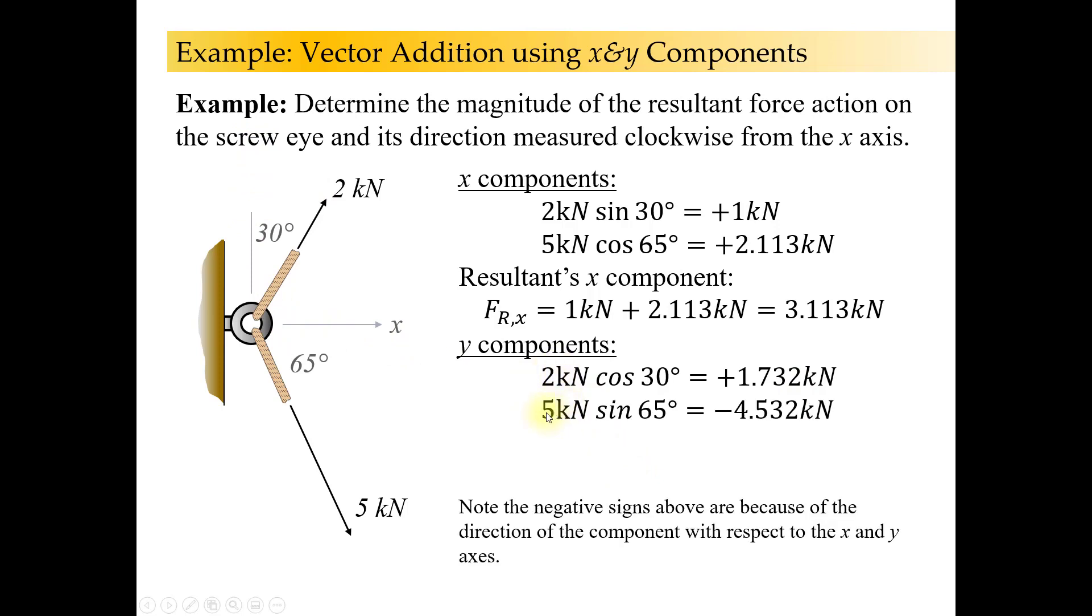This one, however, 5 kilonewtons times the sine of 65 is minus 4.532 because it's pointing in the negative y direction. So the resultant's y component, 1.732 minus 4.532 is equal to, you guessed it, negative 2.8 kilonewtons.